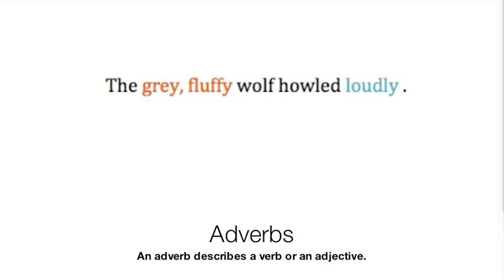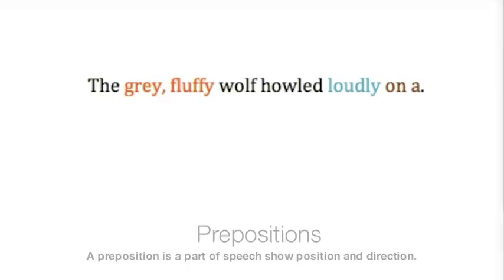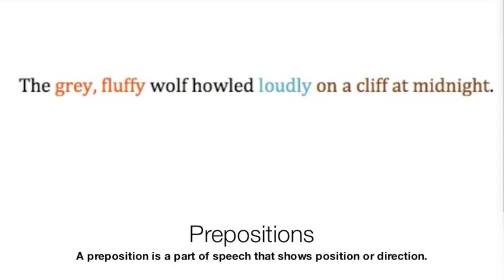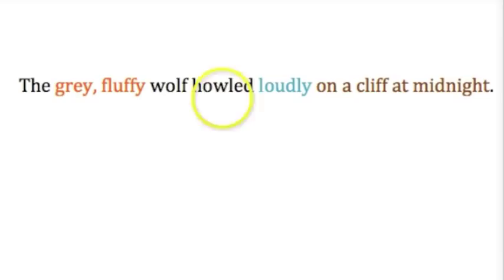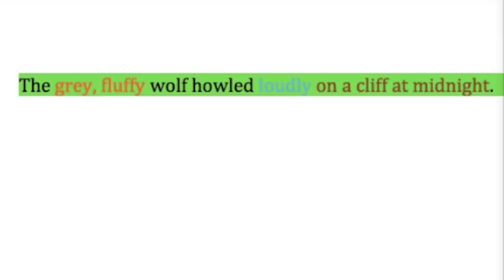Where did the wolf howl? Maybe on a cliff. When did the wolf howl? It could be at midnight. Where and when are forms of prepositions. Prepositions are words that show position and direction. Now the stretched, complete sentence is 'the grey, fluffy wolf howled loudly on a cliff at midnight.'